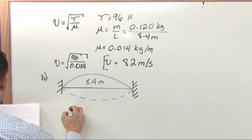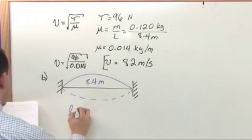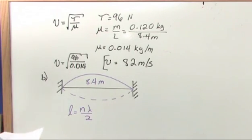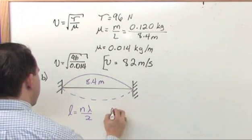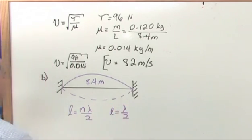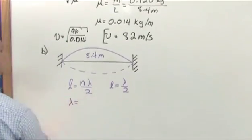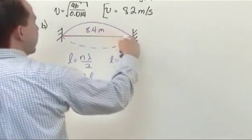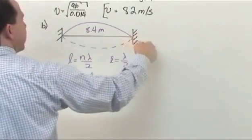Now remember that the length was equal to n lambda over 2. So if we're looking for the first mode, then we'll have L equals lambda over 2, putting a 1 in here. So the wavelength of the longest mode would be 2 times the length of the string, which makes sense because the full wavelength would be out here.